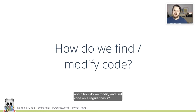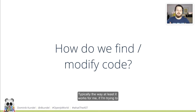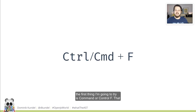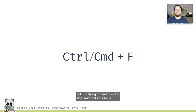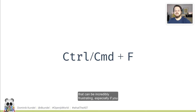I want you to think about how we modify and find code on a regular basis. Typically, the way it works for me, if I'm trying to find something in my project and trying to batch fix it, the first thing I'm going to try is Command or Control+F. That works pretty well if you're trying to find a variable once. The moment you're trying to use it more often and replace it in a bunch of files, it gets more tricky — you start fiddling around with settings, hoping you're not modifying too much or too little, and then your tests hopefully catch any things you might be breaking. That can be incredibly frustrating, especially if you have to do the same thing multiple times.